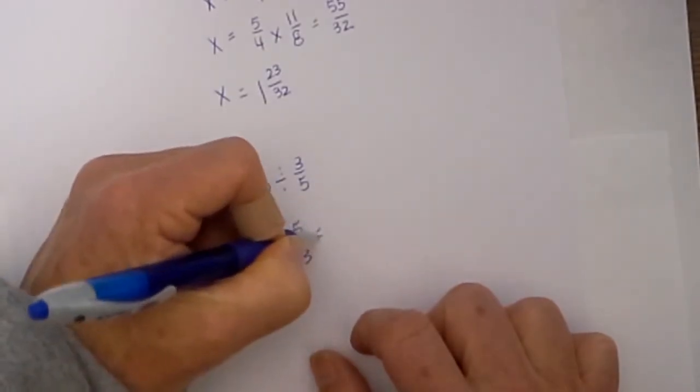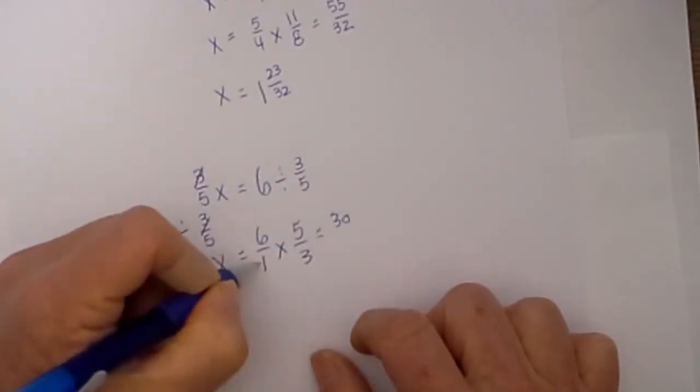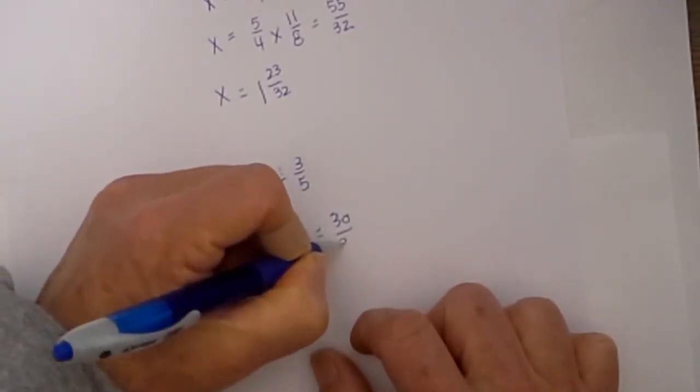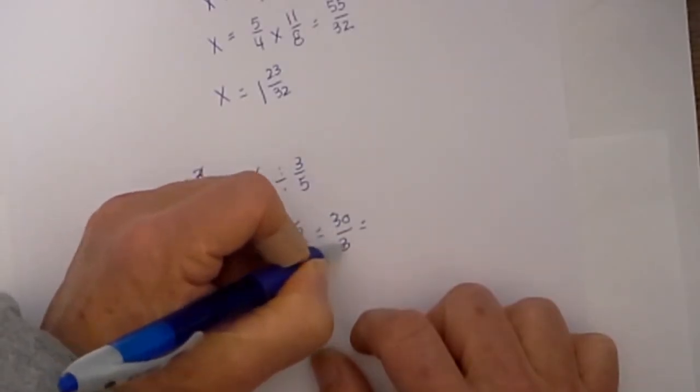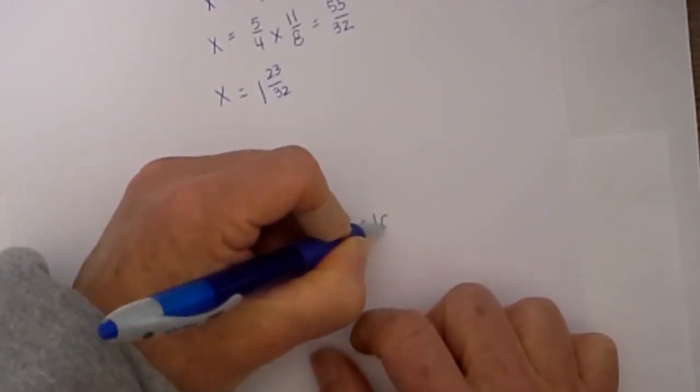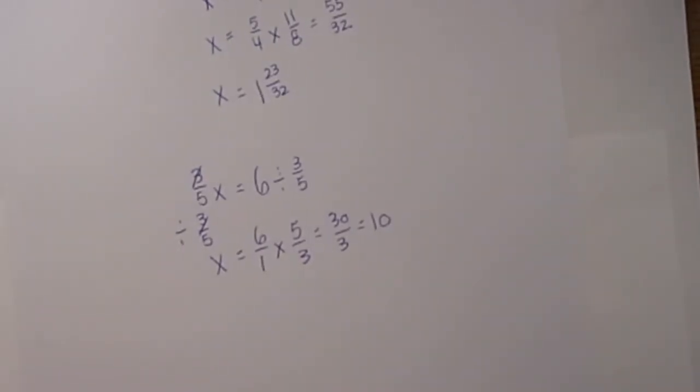6 times 5 is equal to 30. 1 times 3 is 3. And 30 divided by 3 is equal to 10. I hope these were helpful. Thanks for watching. We upload a new math video every day at Moo Moo Math.